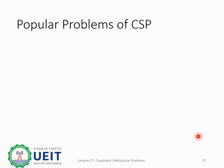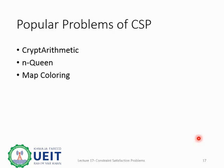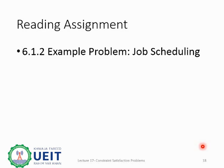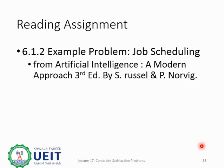These are popular problems that can be solved using CSPs: cryptarithmetic, which is the coding of alphabets to numbers; the N-queens problem, where N queens are placed in an N-by-N matrix such that no queen shares the same row, column, or diagonal; map coloring; crossword puzzles; Sudoku, which we have already seen as a worked example; and the Latin square problem. Your reading assignment is to read section 6.1.2 on the Example Problem of Job Scheduling from Artificial Intelligence: A Modern Approach, 3rd Edition by Stuart Russell and Peter Norvig. This ends the lecture for today.